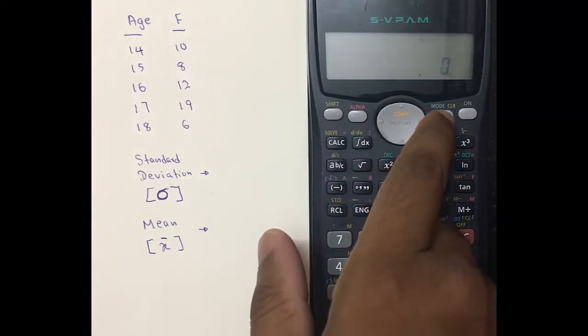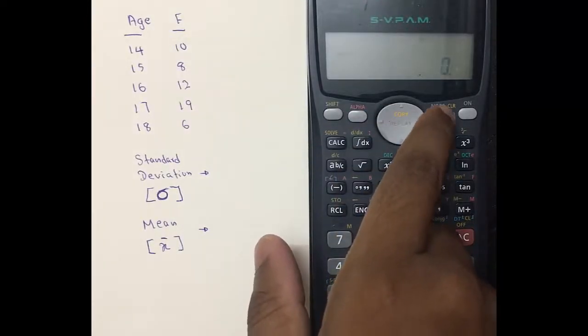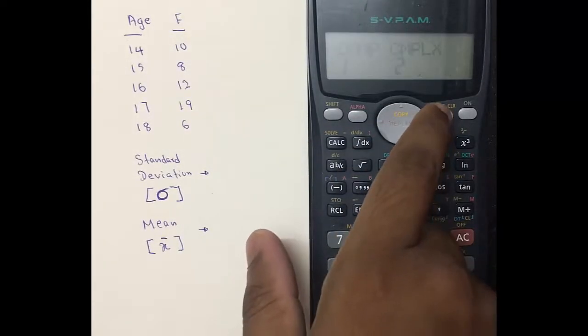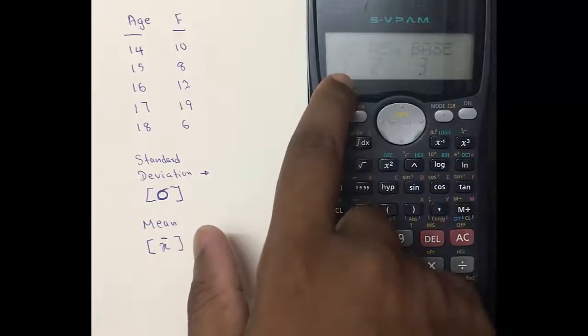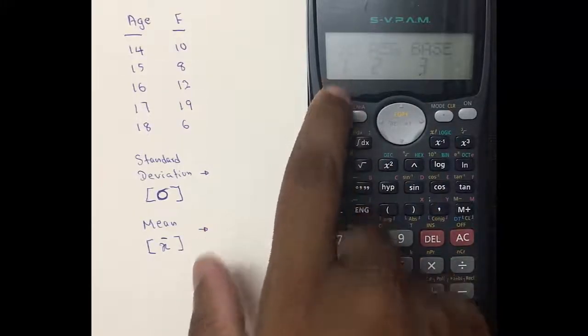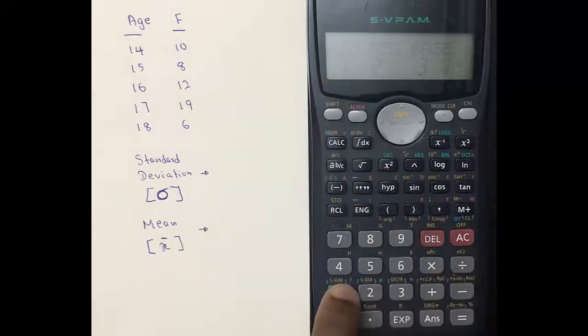Next, press the Mode button. You will see two types: one and two. You have to select SD, which is number one, so press number one.